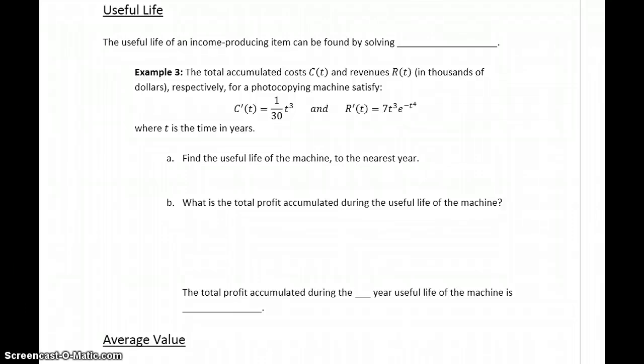The useful life of some income-producing item can be found by solving r prime of t equal to c prime of t. Essentially, t representing the amount of time we want to operate some machine, we want to take the marginal revenue and set it equal to the marginal cost.